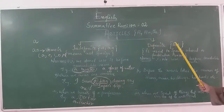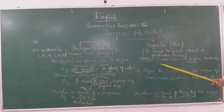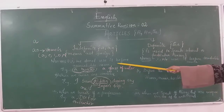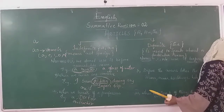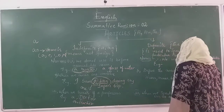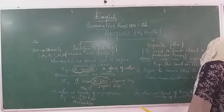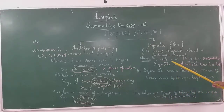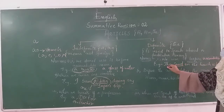Now we will learn about the definite article, that is, THE. THE is used to speak about a particular person or thing. One rule is that we use THE before uncountable nouns. For example, 'The sand on the beach is hot.' Here sand is an uncountable noun, and that is why we use THE.